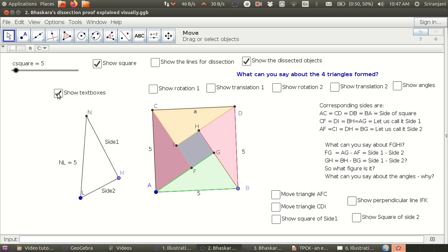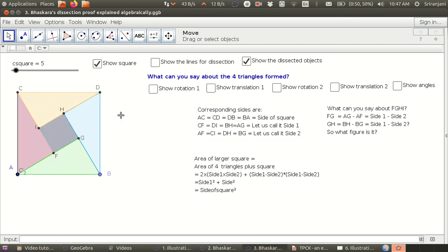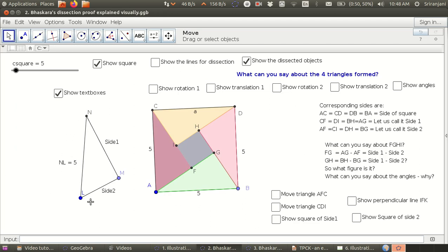At this point we can simply conclude this proof algebraically. This is very straightforward. There are four triangles, half into B into H. The H is nothing but the shorter segment which is side 2. The longer segment in each of these triangles is the base, call it side 1. So 4 times half into side 1 into side 2 is twice of side 1 into side 2, and this square here has a dimension of side 1 minus side 2 squared. Therefore, you get side 1 square plus side 2 square which is equal to the overall c square which is exactly the same as the Pythagoras theorem. You will simply say that NL square equal to side 1 square plus side 2 square. That's already a proof readily available to us.